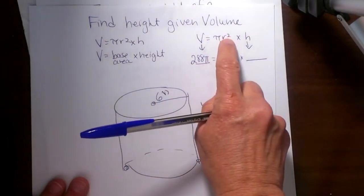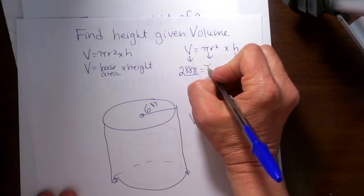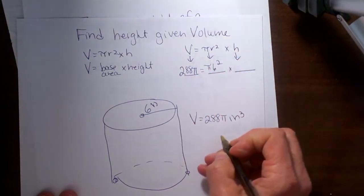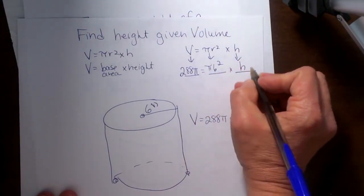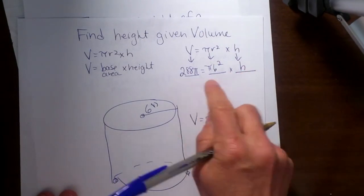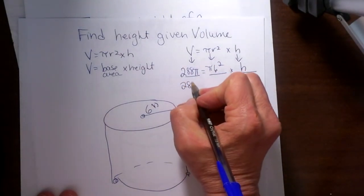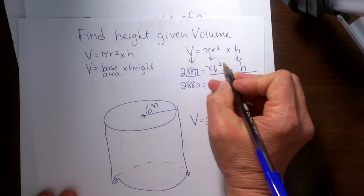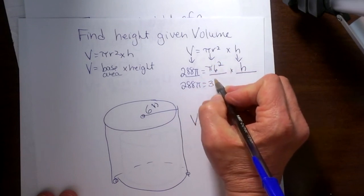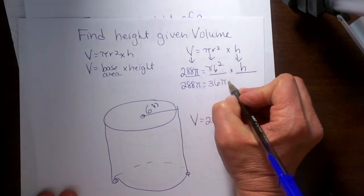All I have to do is plug in 6 for the radius. So π times 6 squared, which leaves me with the unknown variable h. Let's work this out. We have 288π on the left, and 6 squared is 36, so 36π times the height.